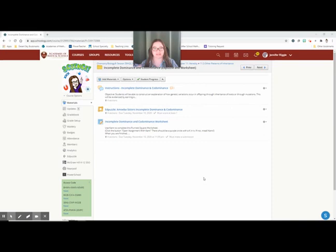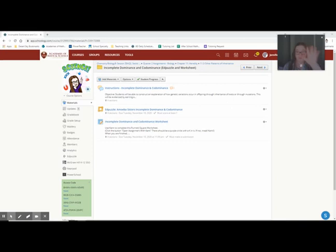So anyway, Incomplete Dominance and Co-dominance Worksheet. Let's go ahead and open up that assignment. That is in Chemistry Biology 8, Quarter 2 Assignments for Biology, Chapter 11 Heredity, 11.3 Other Patterns of Inheritance, and then the folder Incomplete Dominance and Co-Dominance, Edpuzzle and Worksheet. A folder in a folder in a folder.